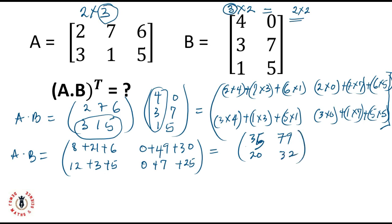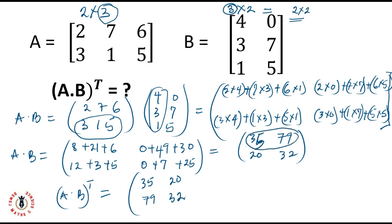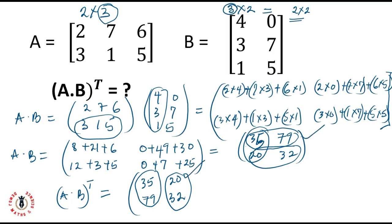Now we have AB. Since we have AB, we can find the transpose of AB. Finding the transpose of AB, we represent it as AB raised to power T. Remember, when finding the transpose, rows become your columns and columns become your rows. So this will be: 35 and 79 will change position — the first row becomes the first column, the second row becomes the second column, the first column becomes the first row, and the second column becomes the second row. The result is the 2 by 2 transposed matrix with 35, 20 in the first row and 79, 32 in the second row.